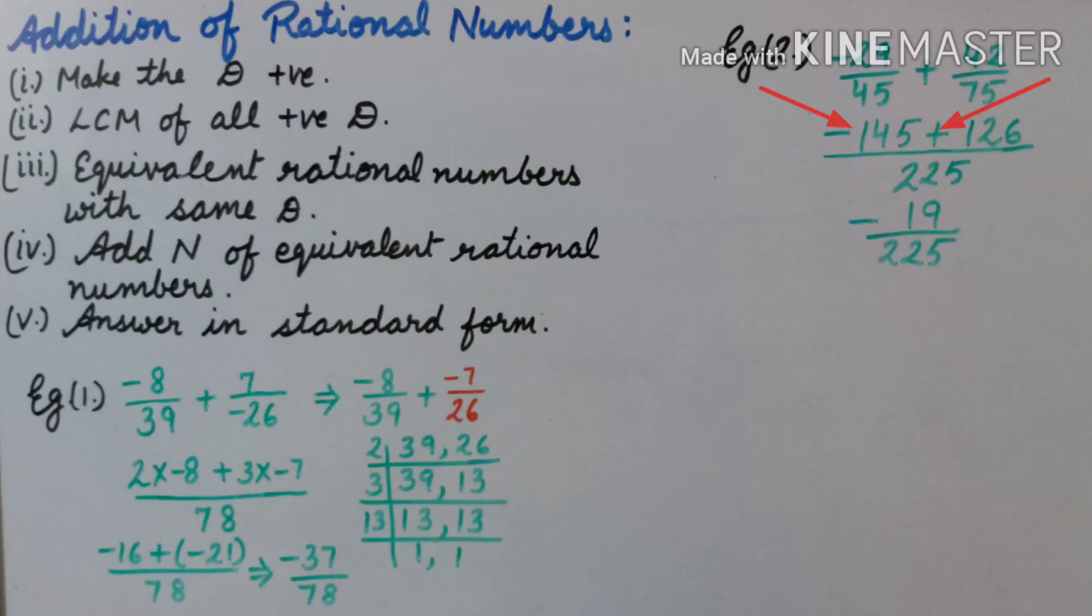As one integer is negative and the other is positive, we will subtract the face value and put the sign of greater face value. That is minus 19, because the difference of 145 and 126 is 19 and the sign of the greater number is minus. So the answer is minus 19 upon 225.